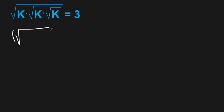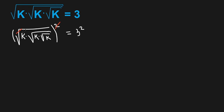So what I'm going to do, I'm going to raise both sides to the power of 2. We have square root of k times square root of k times square root of k, all to the power of 2, equals 3 to the power of 2. Let's eliminate here and we have k times square root of k times square root of k equals 3 squared.